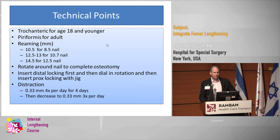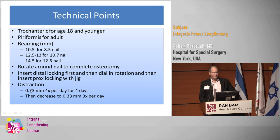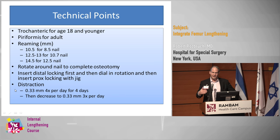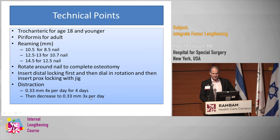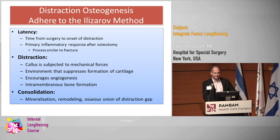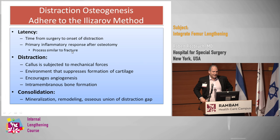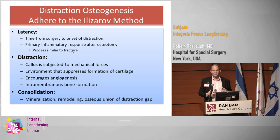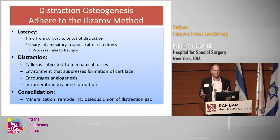My recipe for distraction — which has worked very well for me — is I start distraction on day four in the femur and go 0.33mm four times a day for the first four days. I call it the rule of fours: starting on day four, four times a day for four days, then decrease to three times a day as the typical amount of length. This is really the Ilizarov method — we're adhering to the principles of the Ilizarov method, just using a different tool. All of the things we know as lengthening surgeons really apply here as well.